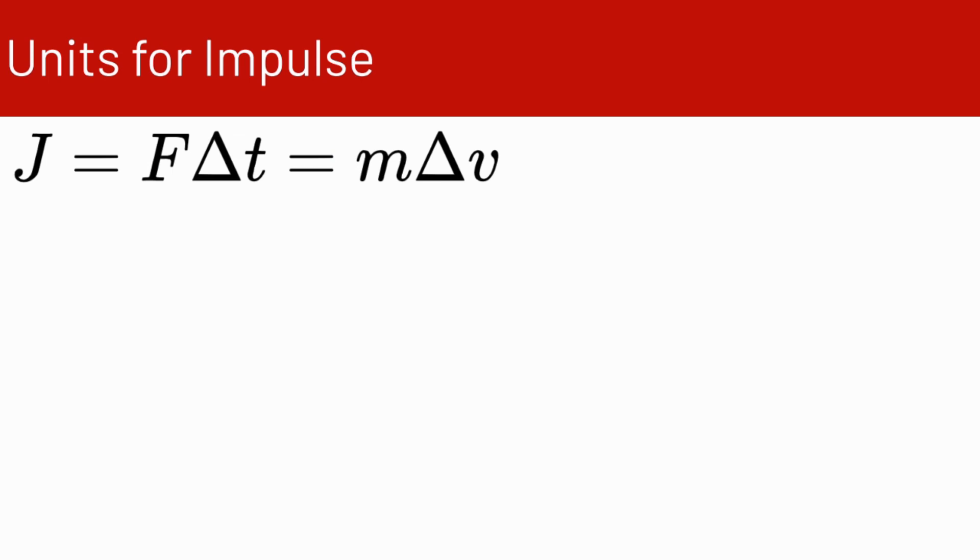Let's look at units for impulse. We have the units for force is newtons, units for time is seconds, so we have newton seconds. For mass we have kilograms, and for velocity we have meters per second, so we have kilograms meters per second. Newton seconds and kilogram meters per second are identical to each other, and often for impulse we'll use the newton second.